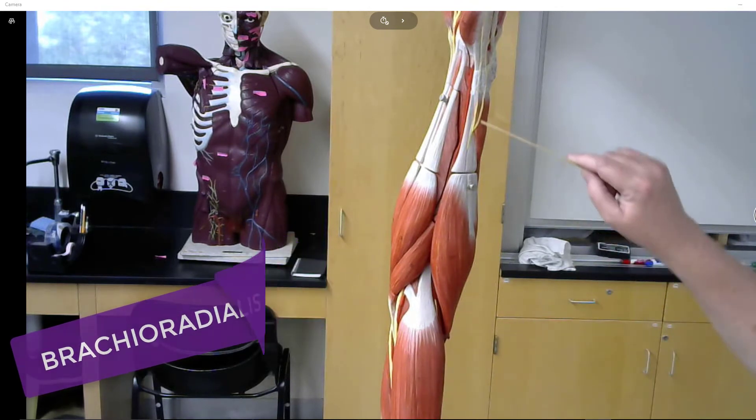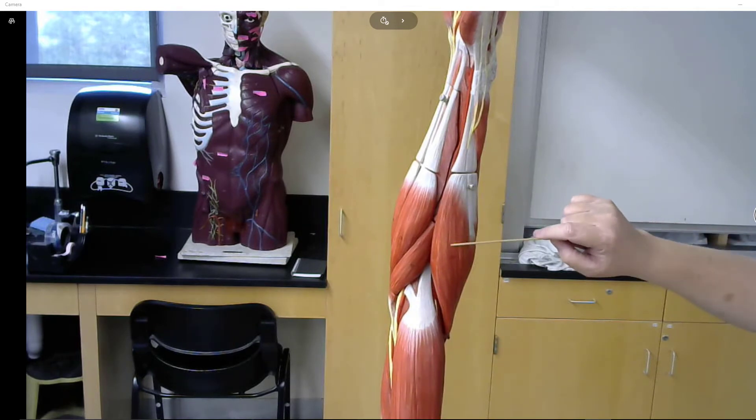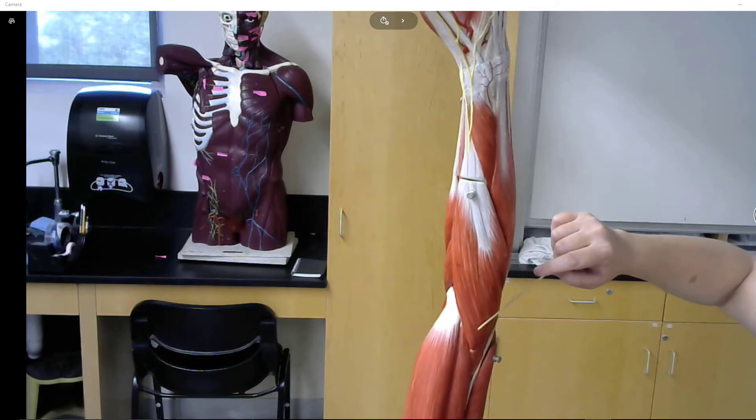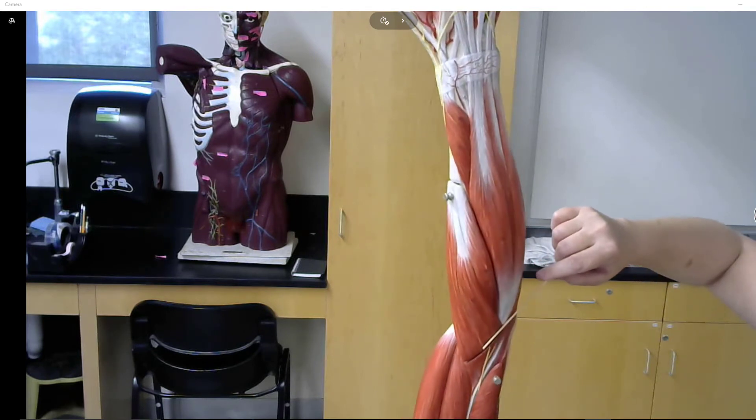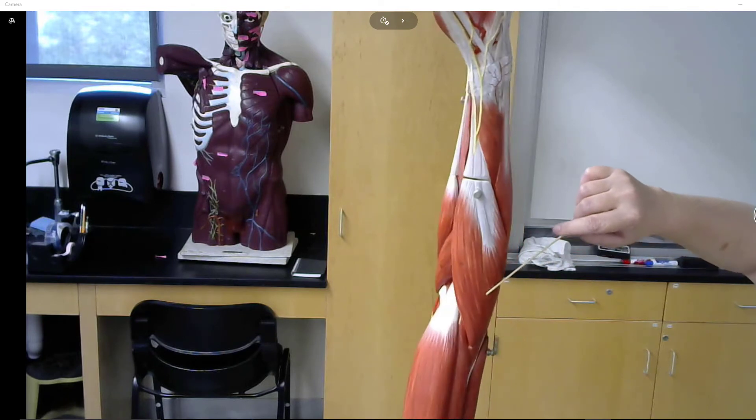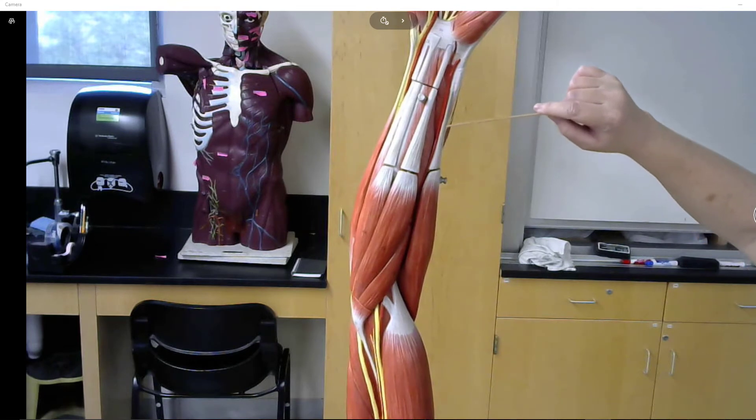So, this is the brachioradialis, and it kind of twists around. It goes from here, and then twists around just a little bit to about there in this model. Let's do that again. It goes down here. This is the brachioradialis, radialis because it's on the radial side.